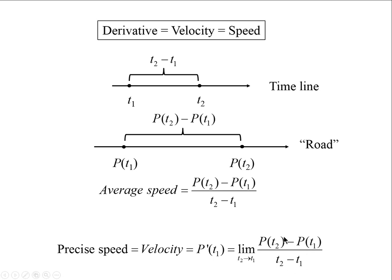This gives us the definition that we consider the same fractions as before, but now we let t2 approach t1. What we obtain in the limit is denoted P'(t1), and as is clear from the previous discussion, this will be velocity or precise speed, or instantaneous speed, at point t1.